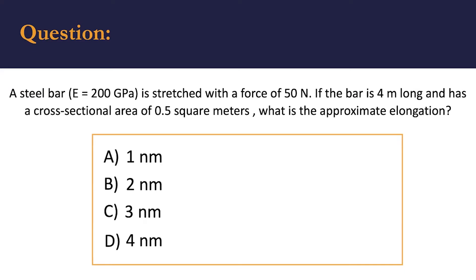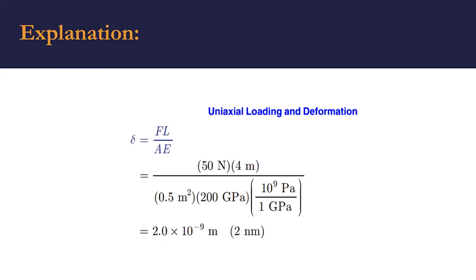If you spent a lot of time studying and preparing for the FE exam, you can probably look at this problem and know that you have to find the elongation utilizing the uniaxial loading and deformation equation. It's very simple because you have all of the variables: the force is 50 newtons, the length of the rod is 4 meters, the cross-sectional area is 0.5 square meters, and you have the modulus of elasticity, which is 200 gigapascals.